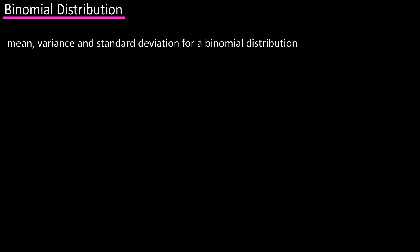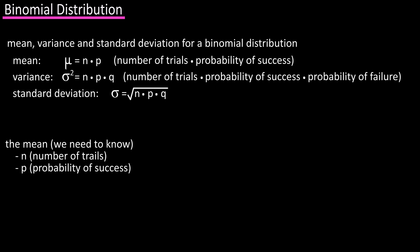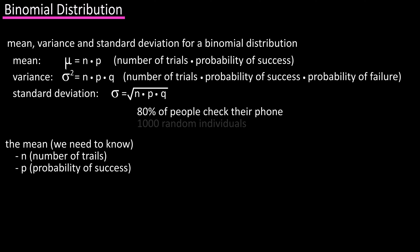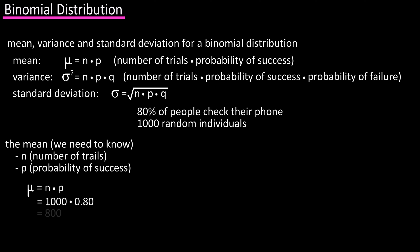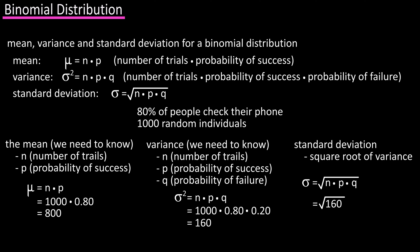We can also compute the mean, variance, and standard deviation for a binomial distribution, and these formulas are listed here. To find the mean, we need to know n, the number of trials, and p, the probability of success. Using our same data, 80% of people check their phone during a workout, if we randomly selected 1,000 individuals, what would the mean be? So mu, the mean, equals n, in this case 1,000, times p, 0.80, which equals 800. The variance would be sigma squared equals n, 1,000, times p, 0.80, times q, which is 1 minus p, or 0.20, and this computes to 160. And to find the standard deviation, we take the square root of the variance, square root of 160, which equals 12.65.